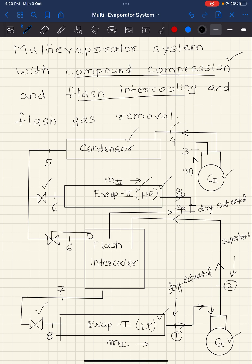The refrigerant is then compressed in compressor two from the intermediate pressure to the condenser pressure, reaching state four as a superheated vapor. It is condensed to a saturated liquid in the condenser, then expanded to state six in expansion valve one, passing into the flash intercooler. The refrigerant exits the flash intercooler as a saturated liquid at intermediate pressure, meaning flash gases are removed — the flash intercooler also acts as a flash gas removal chamber.